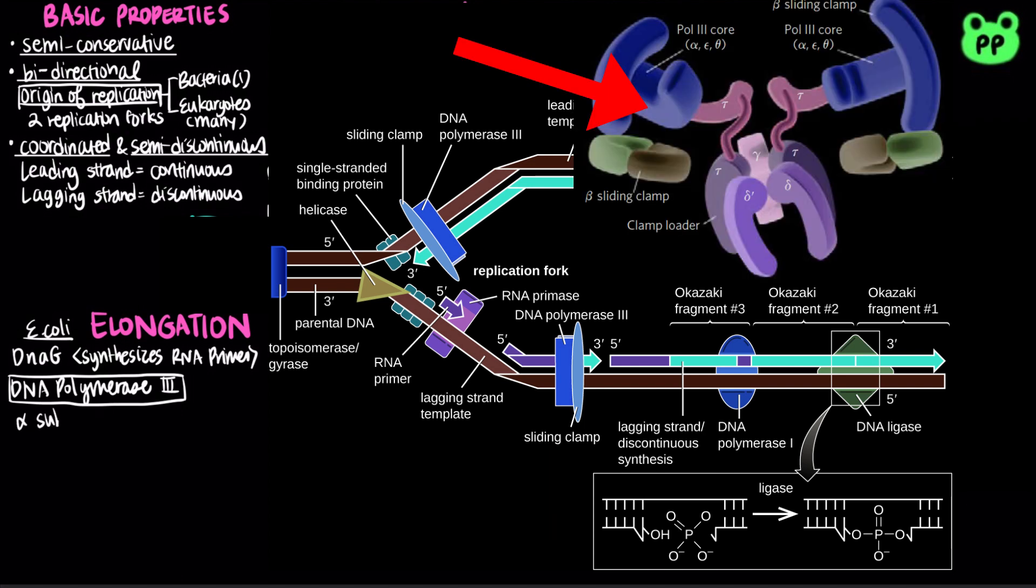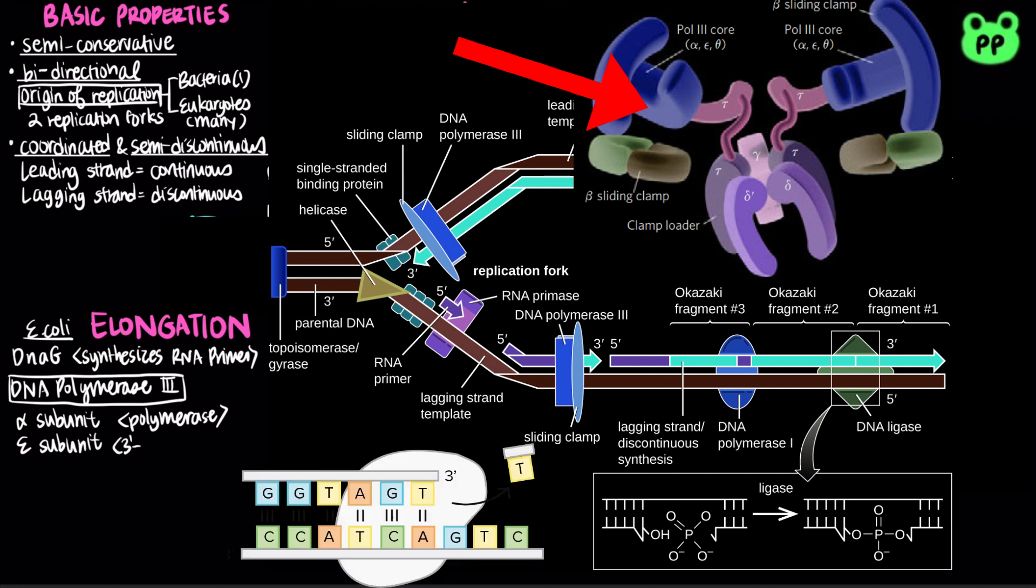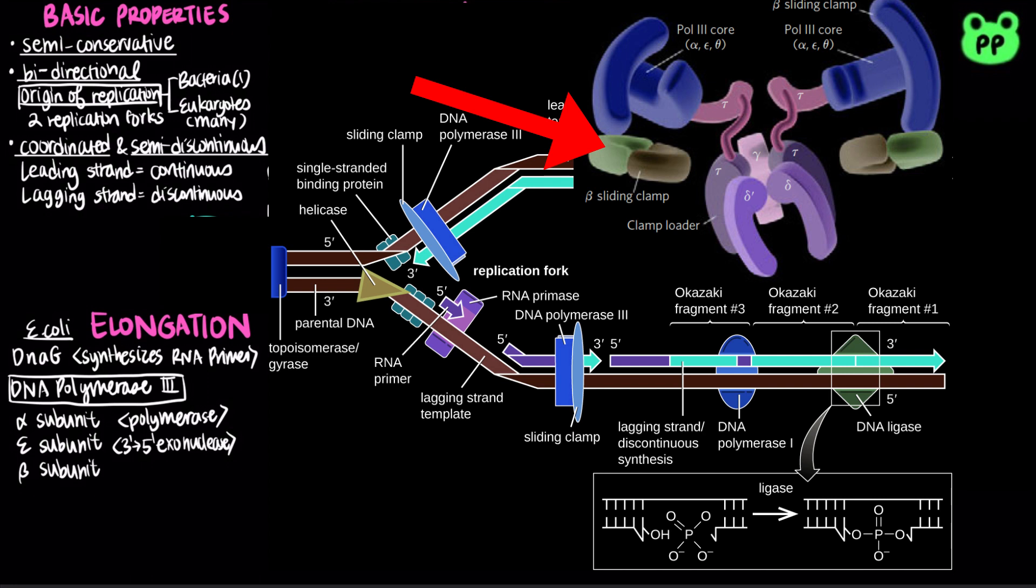The core polymerase contains the alpha subunit, which carries out the polymerase activity that adds nucleotides to the RNA primer. The epsilon subunit contains 3' to 5' exonuclease activity, which functions as a proofreading mechanism that removes an incorrect base pair. The beta subunit serves as a clamp to keep the polymerase attached to the DNA strand, improving its processivity.